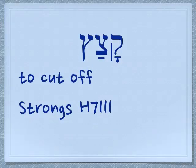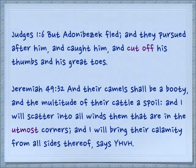The corresponding geminate verb, where we have the same letter twice at the end, 'katzatz,' also means to cut off. Judges 1:6 — but Adonai Bezek fled, and they pursued after him, and caught him, and cut off his thumbs and his great toes.